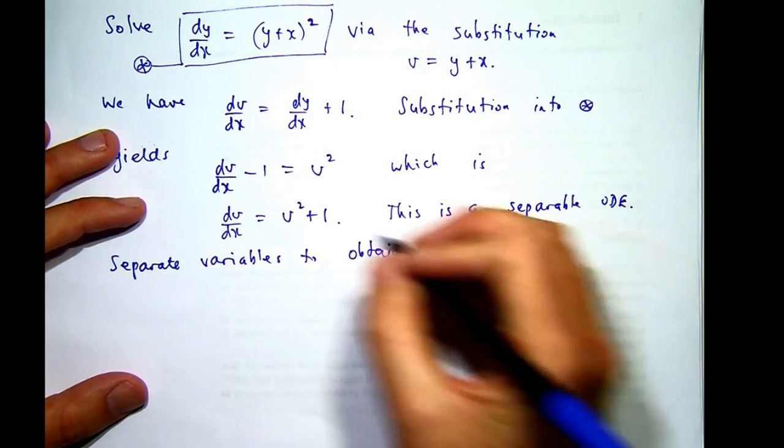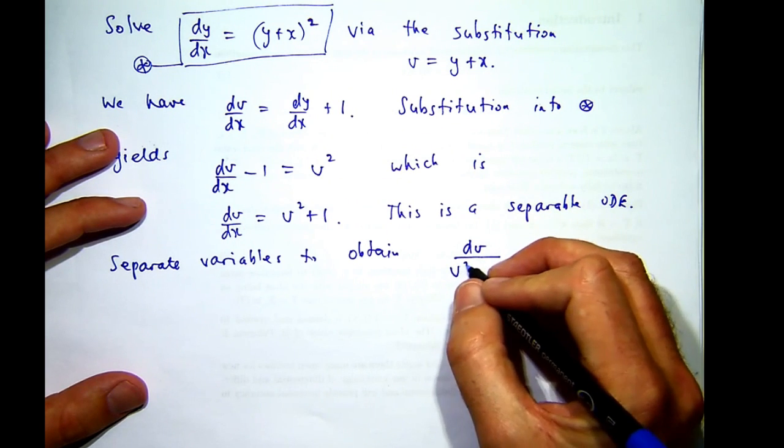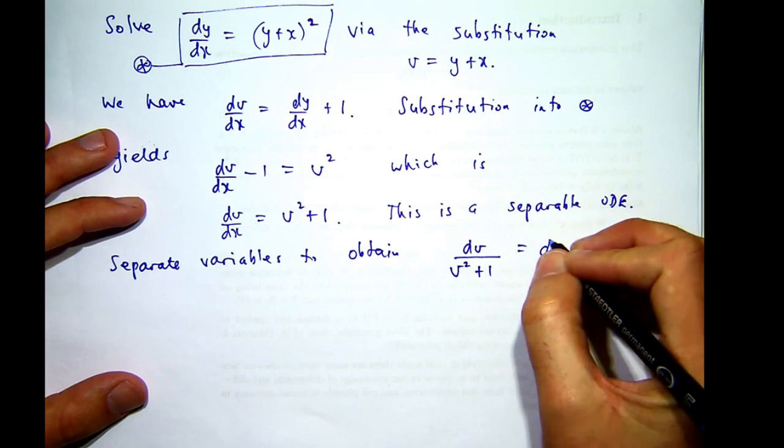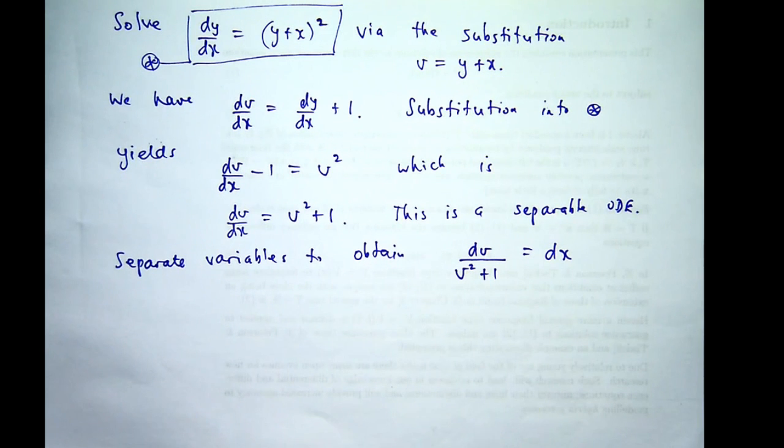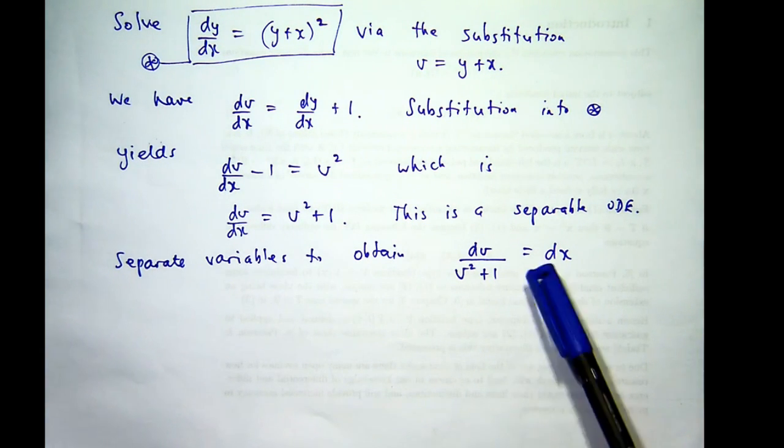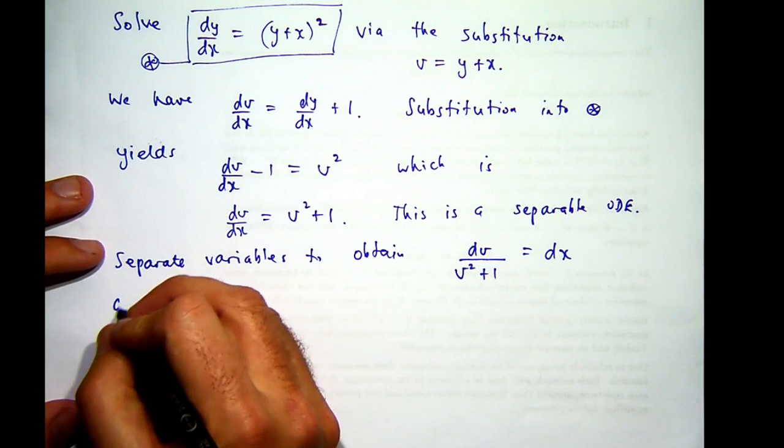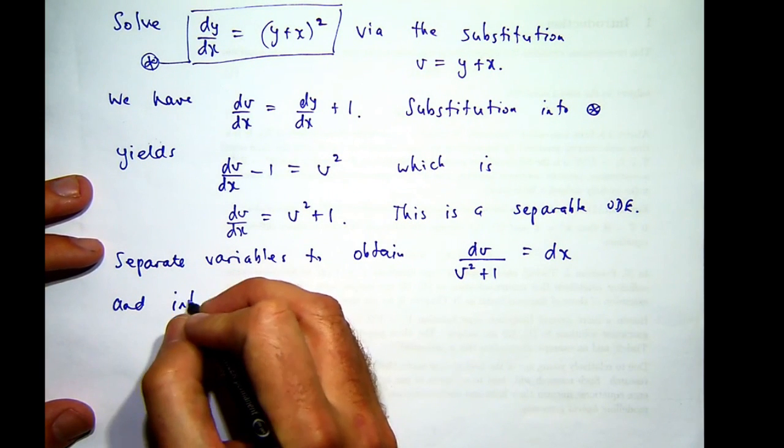So the v² + 1 comes down here, the dx goes up to the right-hand side. And if I integrate both sides, on the left-hand side, I'll integrate with respect to v. On the right-hand side, I'll integrate with respect to x.